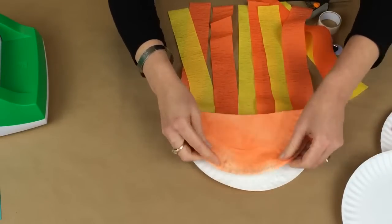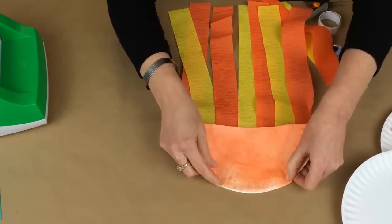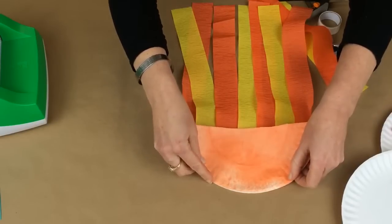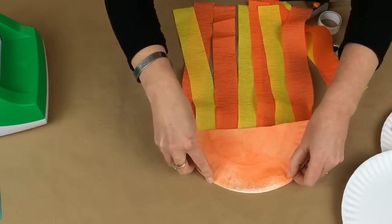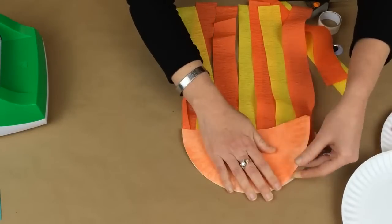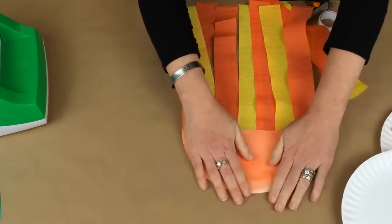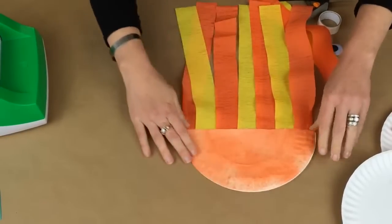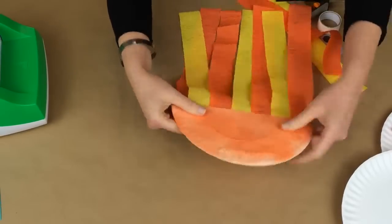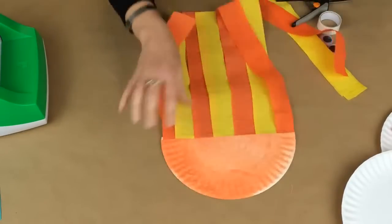Line it up and press it down. That's going to hold all of my other pieces in place. And if you've got a little bit of overhang you can just go ahead and trim that. Flip it over.